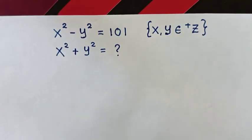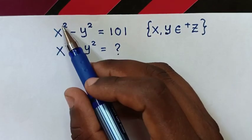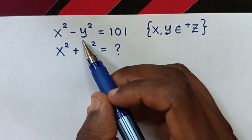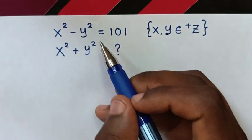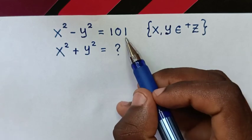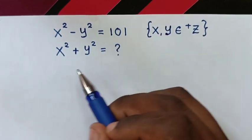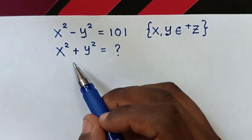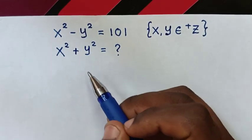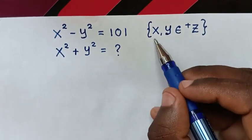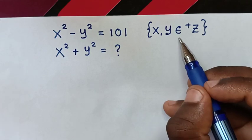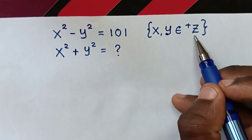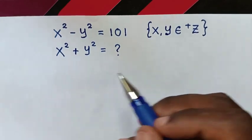Hello! How to solve x squared minus y squared equals 101? Find the value of x squared plus y squared, such that x and y are elements of positive integers.